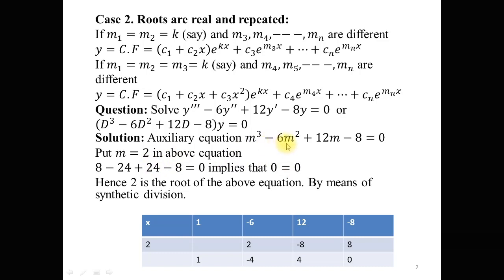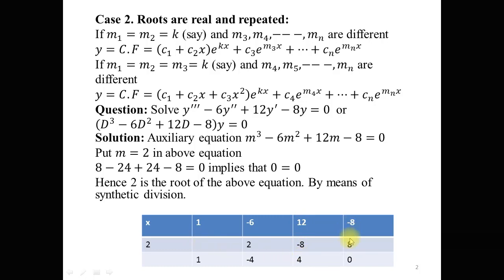To find the remaining two roots using synthetic division, since the coefficients of this auxiliary equation are 1, -6, 12, -8, and the first root is 2: 1 × 2 = 2; -6 + 2 = -4; -4 × 2 = -8; 12 - 8 = 4; 4 × 2 = 8; -8 + 8 = 0.